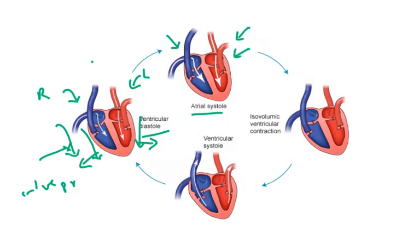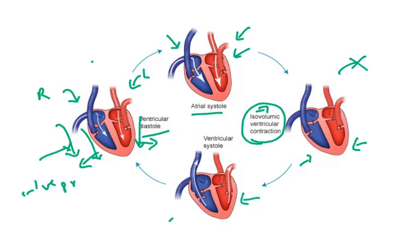After that there occurs something called iso volumetric ventricular contraction — all the valves close and ventricle contraction occurs. Because valves are closed, no blood goes out of the heart, so the volume of blood is not changing — that is why it is called iso volumetric. After that you have ventricular systole, wherein ventricles contract and blood goes out — from the right side to lungs, and from the left side to aorta and body parts. This is the cardiac cycle.